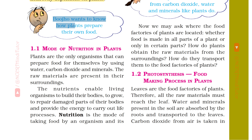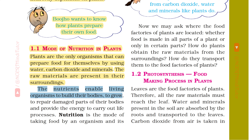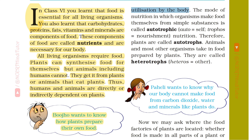Bujo wants to know how plants prepare their own food. Plants are the only organisms that can prepare food for themselves by using water, carbon dioxide and minerals. The raw materials are present in their surroundings. The nutrients enable living organisms to build their bodies, to grow, to repair damaged parts of their bodies and provide the energy to carry out life processes. Nutrition is the mode of taking food by an organism and its utilization by the body.